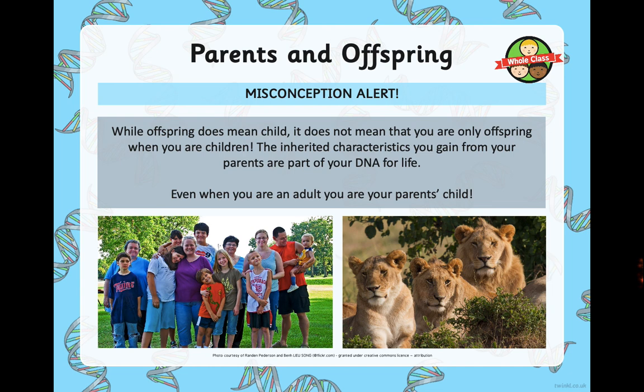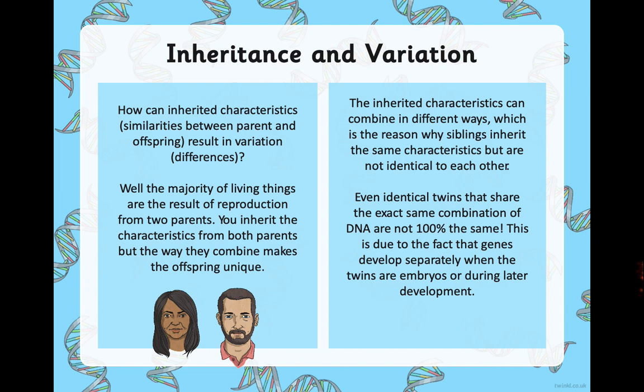However, just so you don't have a misconception — while offspring does mean child, it does not mean that you're only offspring when you're young. The inherited characteristics you've gained from your parents are part of your DNA — that microchip inside all your cells — for life. So even when you're an adult, you are still your parents' offspring. Even if your grandparent's parent is no longer around, they are still the offspring of that person. It doesn't ever go away.